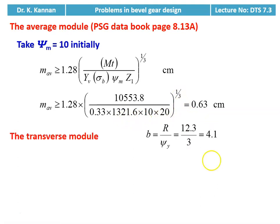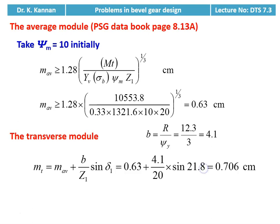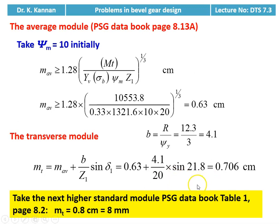Then we calculate the transverse module. We require face width b = R / psi_y = 12.3 / 3 = 4.1. The transverse module = average module + b / (Z1 × sin(delta_1)) = 0.63 + 4.1 / (20 × sin(21.8°)) = 0.706 centimeter. We take the next higher standard transverse module mt = 0.8 centimeter (8 millimeter).